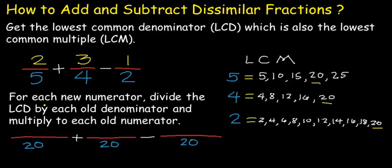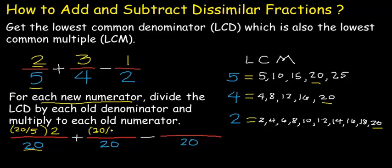Our second step: for each new numerator, divide the LCD by the old denominator, and multiply that by the old numerator. So we have 20 divided by 5, multiplied by 2. Then 20 divided by 4, multiplied by 3. And 20 divided by 2, multiplied by 1.